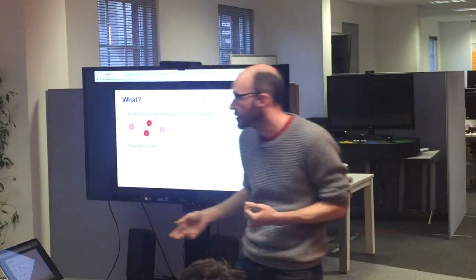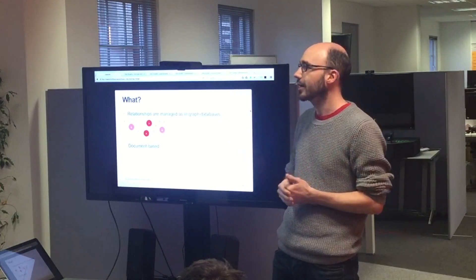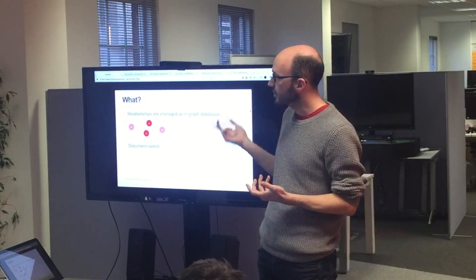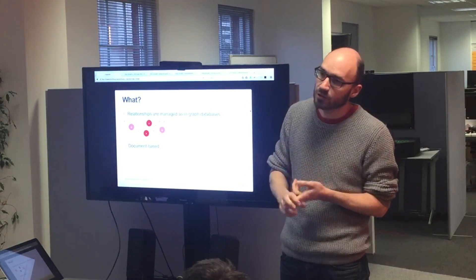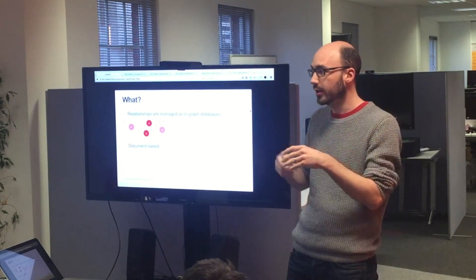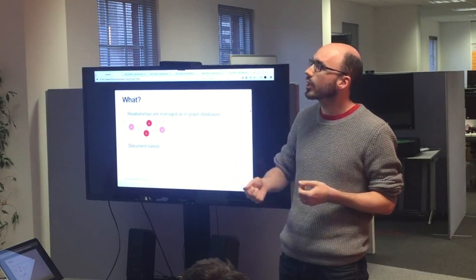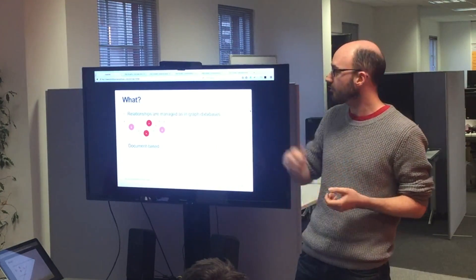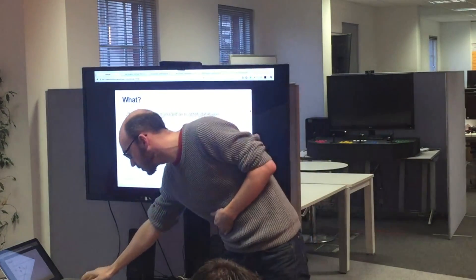As opposed to something like Neo4j, which is the only other graph database I've looked at, OrientDB also has document store properties, so the vertices and edges can each have properties added to them. Rather than, as in Neo4j, where you have to look up your data in a separate storage system once you've got your vertex ID, you can have the data right on the vertex and edge right there, which is a bit more efficient.